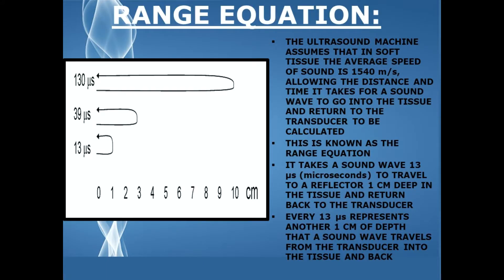The ultrasound machine assumes that in soft tissue, the average speed of sound, which is the propagation speed, is 1540 meters per second, allowing the distance and time it takes for a sound wave to go into the tissue and return to the transducer to be calculated. This is known as the range equation. It takes a sound wave 13 microseconds to travel to a reflector one centimeter deep in the tissue and return back to the transducer.